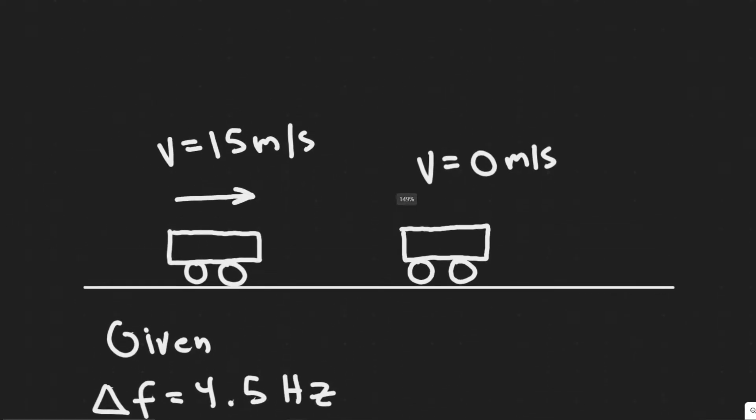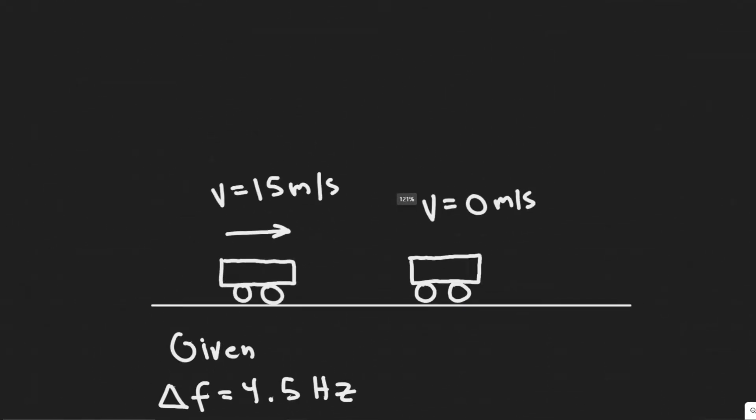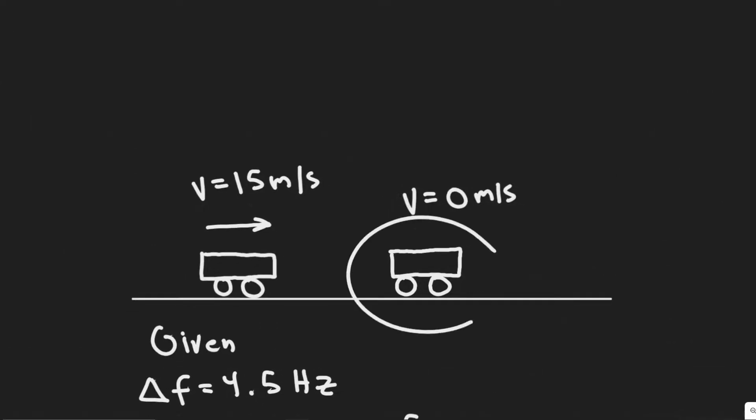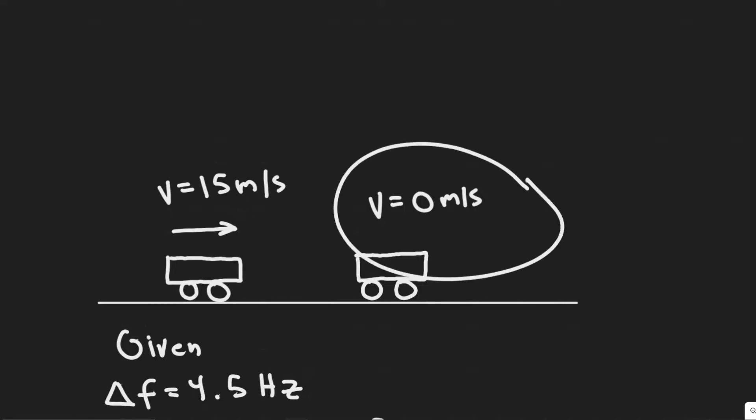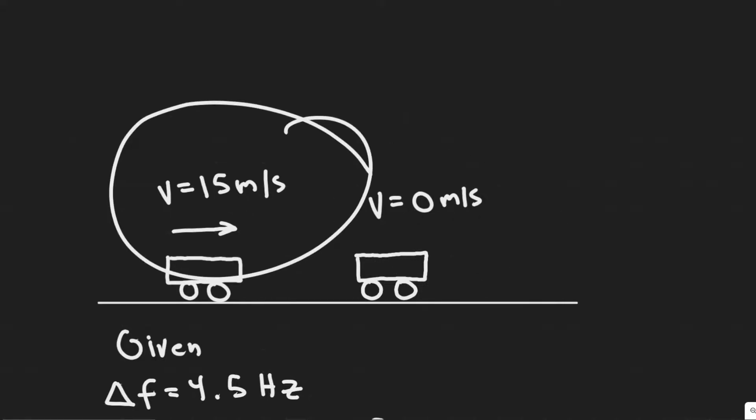The first thing you always want to do in these problems is draw what's going on. So we have two cars and they're both going to have a horn on it emitting the same frequency. We know one car is going to be at rest and one car is going to be traveling 15 meters per second towards the other car.